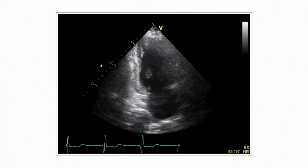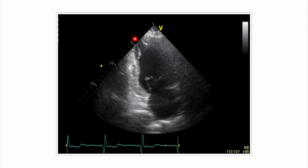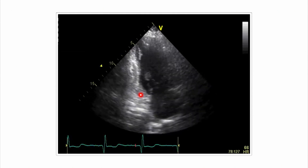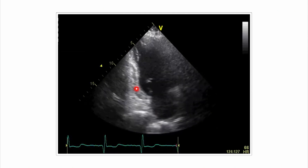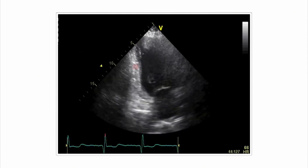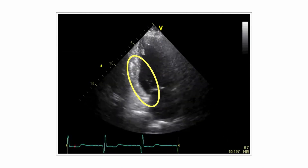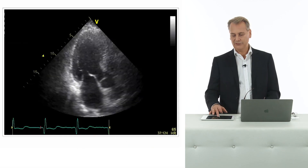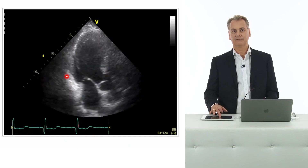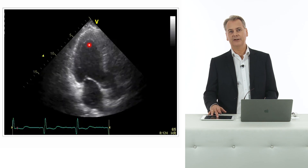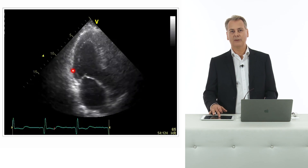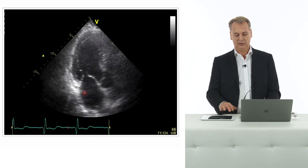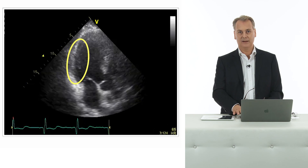Here is the two-chamber view with the inferior wall. You can see that there are wall-motion abnormalities in the basal and mid part of the inferior wall. We also see that there is hypokinesia or a problem in the posterolateral wall as well.